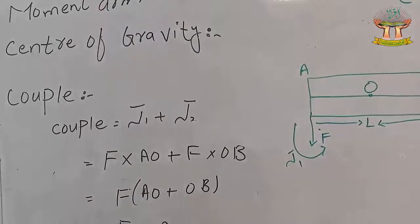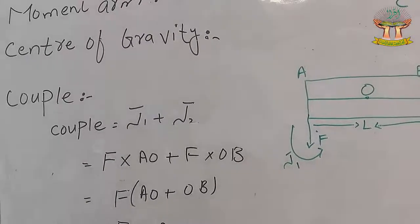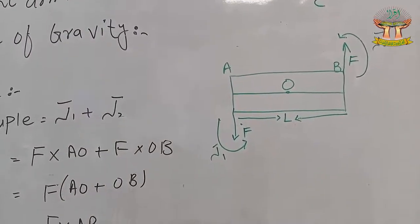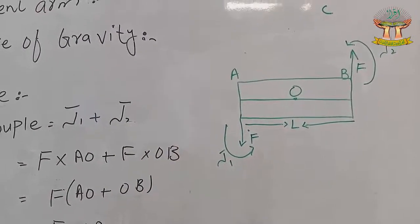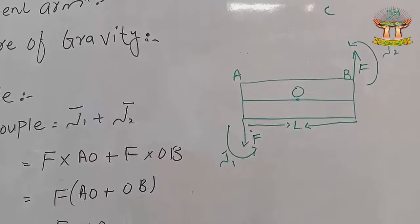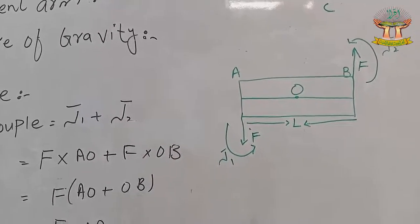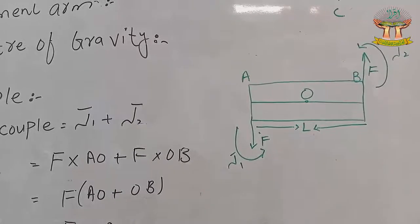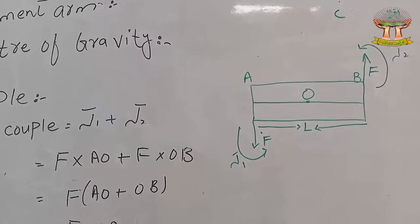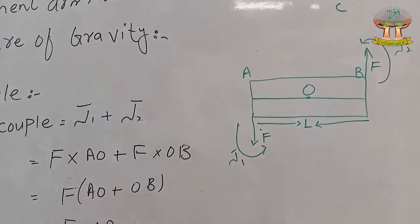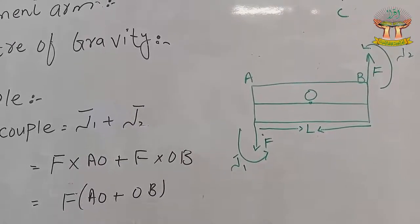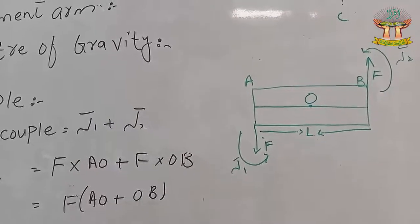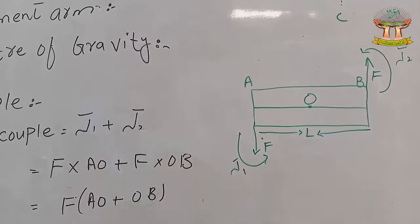What do we call a couple? A couple consists of two equal forces acting in opposite directions with different lines of action. In the diagram, we call them tau 1 and tau 2, acting anti-clockwise. The couple is tau 1 plus tau 2.